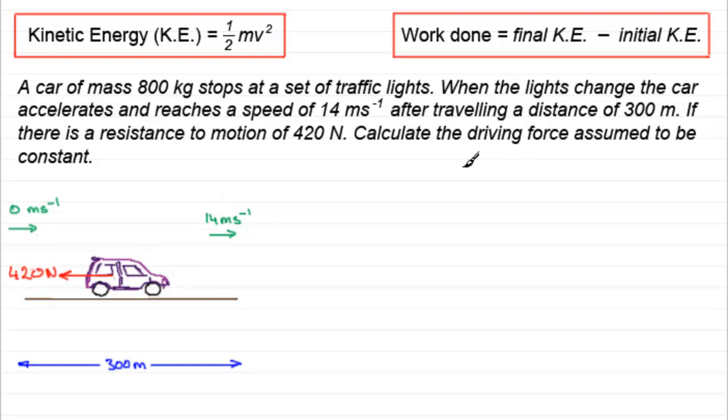If there's a resistance to motion of 420 newtons, we've got to calculate the driving force assumed to be constant. So the driving force I'll mark in with a D, D newtons. Now there's also the weight of the car acting downwards, that's going to be mg, or in this case 800g newtons.